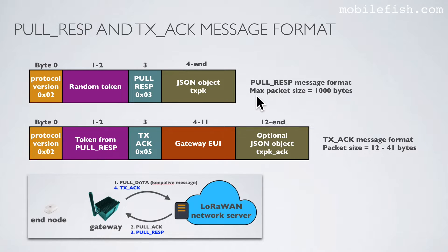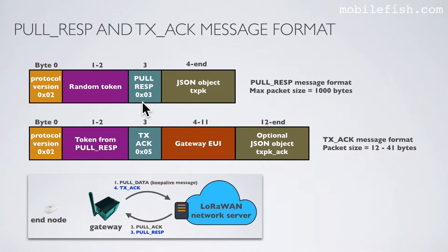This is the pull response packet message format. The maximum packet size is 1000 bytes. Byte 0 contains protocol version 2. Byte 1 and 2 contain a random token. Byte 3 contains an identifier — value 3 means pull response. Starting from byte 4 it contains the transmit packet JSON object.